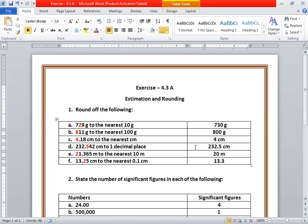Then we have 21.365 meters to the nearest 10 meters. The 10 meter digit is 2 in red color, and 1.365 is less than 5, so we neglect it. The answer is 20 meters.